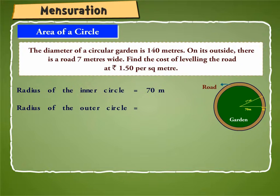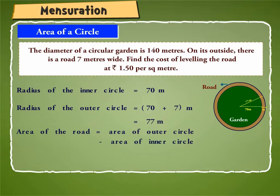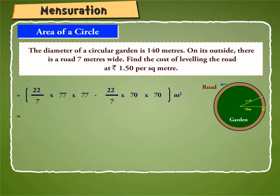Radius of the outer circle is equal to 70 plus 7 or 77 meter. Area of the road is equal to area of outer circle minus area of inner circle is equal to 22/7 × 77 × 77 minus 22/7 × 70 × 70 whole meter square is equal to 18,634 minus 15,400 meter square is equal to 3,234 meter square.